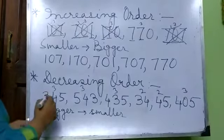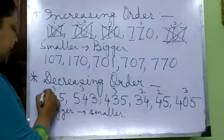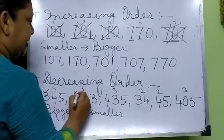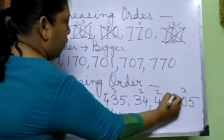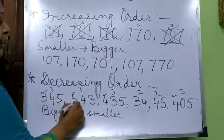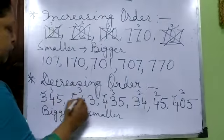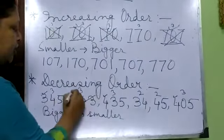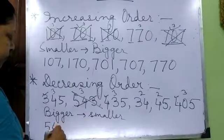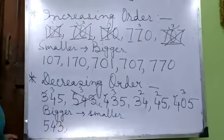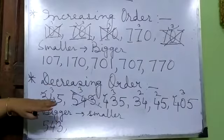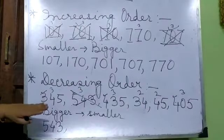Now, 3 is your first digit, 5 is your first digit, 4, 4. So 3 is the smallest and the bigger digit is 5. So we will cross out that number and write 5, 4, 3. We will write the biggest number first.